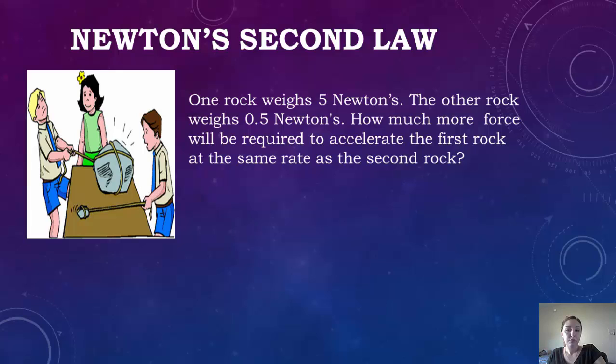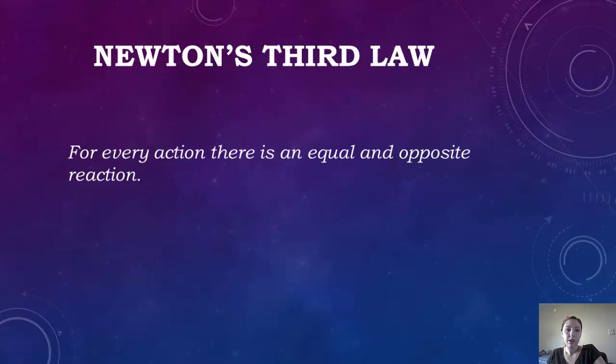Okay, so let's look at this problem. One rock weighs 5 Newtons and the other rock weighs 0.5 Newtons. How much more force will be required to accelerate the first rock at the same rate as the second rock? So you're trying to get them equal. And if you want to do that, you'd have to multiply 0.5 times 10 to get it to 5 Newtons. That way they're equal and they're going to accelerate at the same rate.